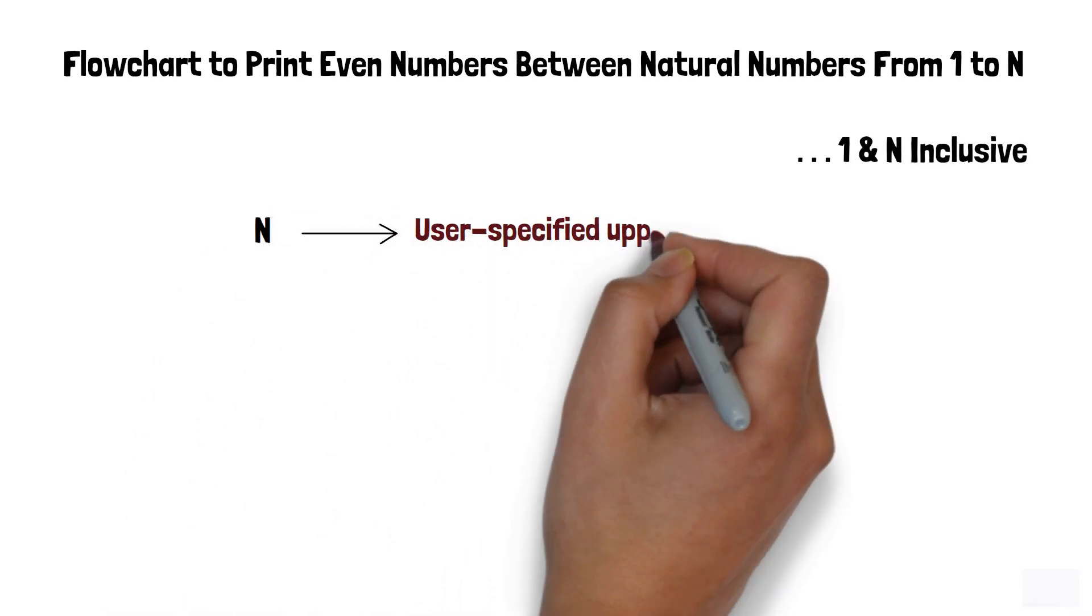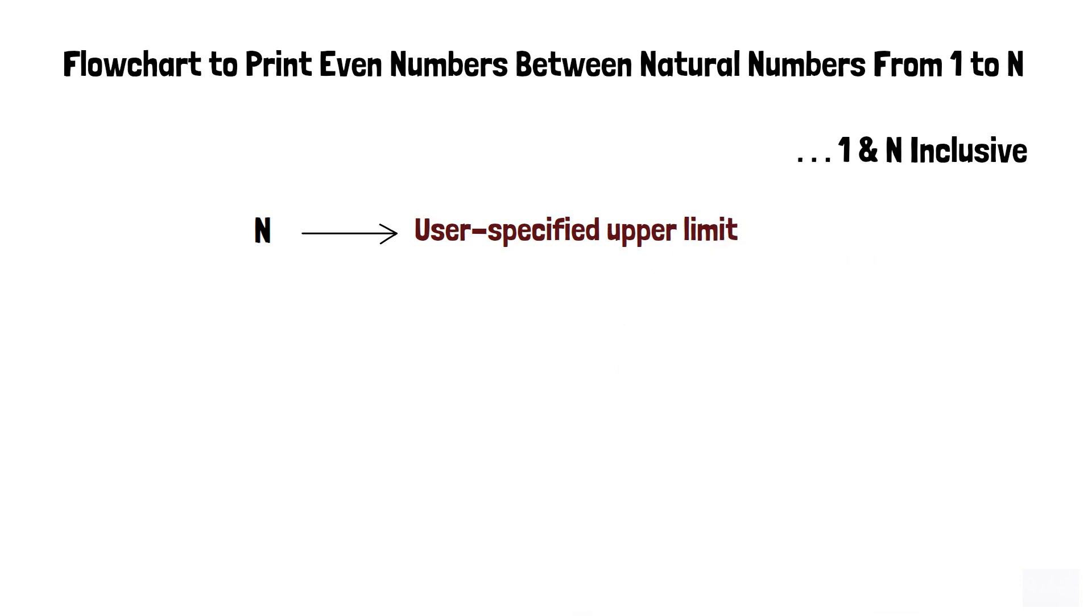Here, 1 and n both are inclusive, where n denotes the user specified upper limit. For example,